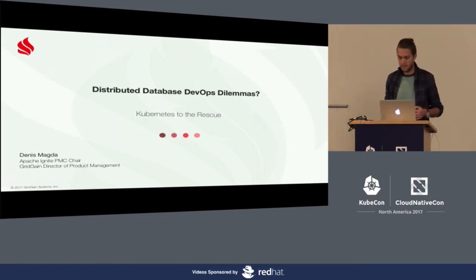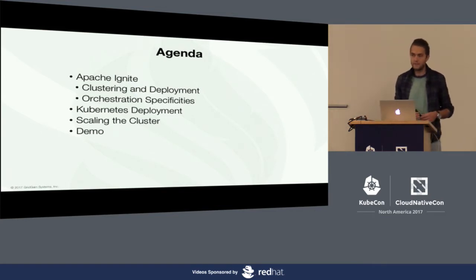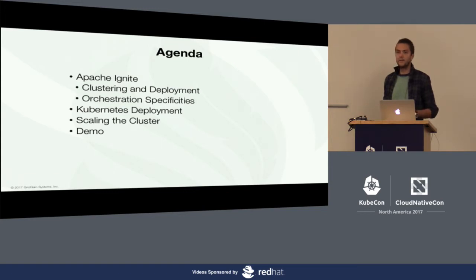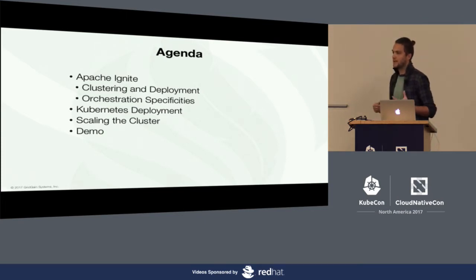Considering this, our agenda for today looks like this. First, I'm going to use Apache Ignite as an example, but basically the concepts and solutions I'll cover today can be adopted for other distributed databases such as Cassandra, MAMSQL, and Redis. The main difference between a distributed database and regular databases is that you have a cluster of machines deployed somewhere, and we need to stick the database's clustering component with the Kubernetes environment — that's the essential thing to care about.